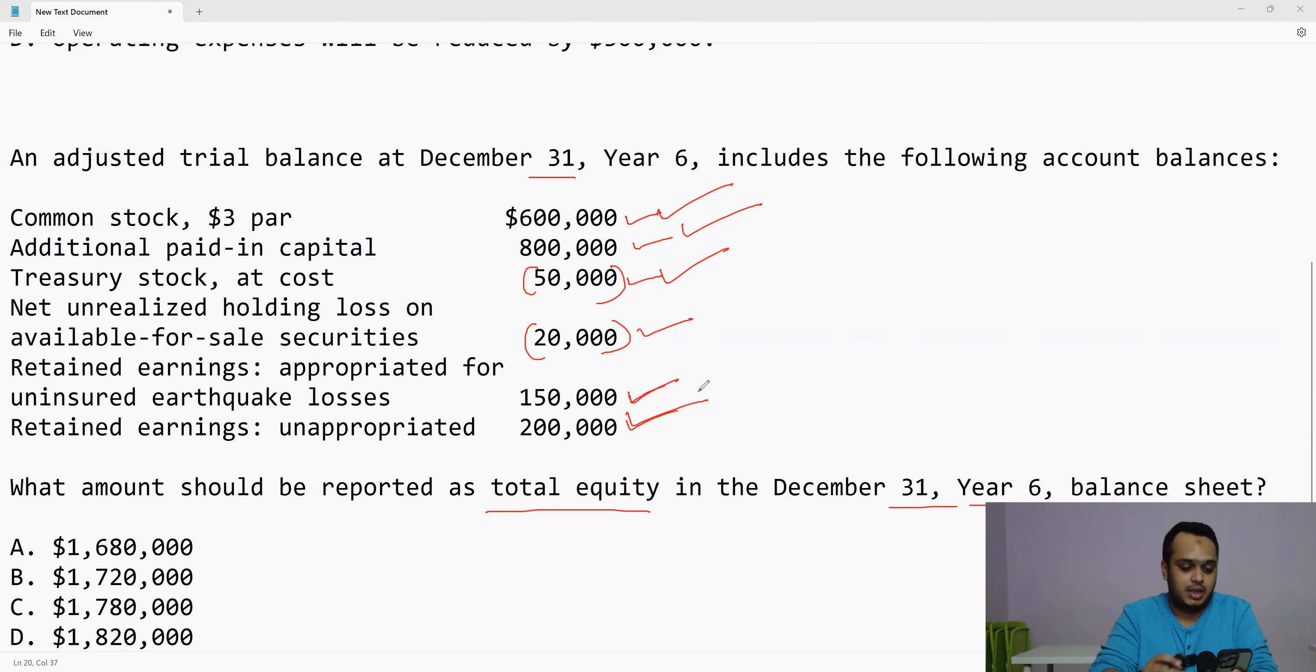So in short, what I have to do? 600,000 plus 800,000 minus 50,000 minus 20,000 plus 150,000 plus 200,000. Which gives me 1,680,000. I hope you guys are able to see it on this phone. If you are able to see it, well, I am good. If not, then still I have put it on the table, on the screen. So the answer here is A, 1,680,000.